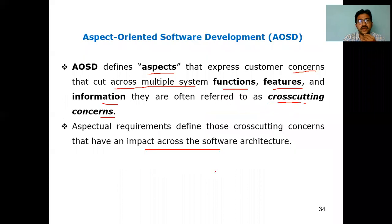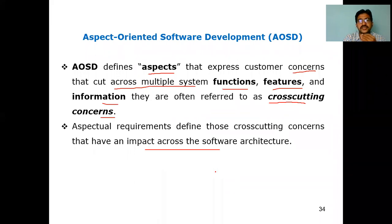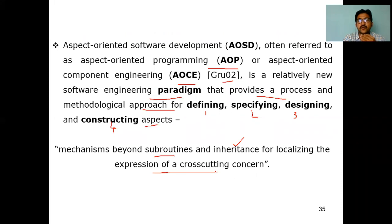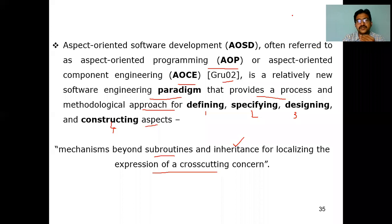In summary, aspect oriented software development deals with expressing customer concerns that cross-cut the functions, features, and information — referred to as cross-cutting concerns. AOSD is also called AOP (Aspect Oriented Programming) and AOC (Aspect Oriented Component Engineering), consisting of activities like defining, specifying, designing, and construction, using mechanisms such as subroutines and inheritance. These are all three types of specialized process models: component-based, formal method model, and aspect oriented software model.